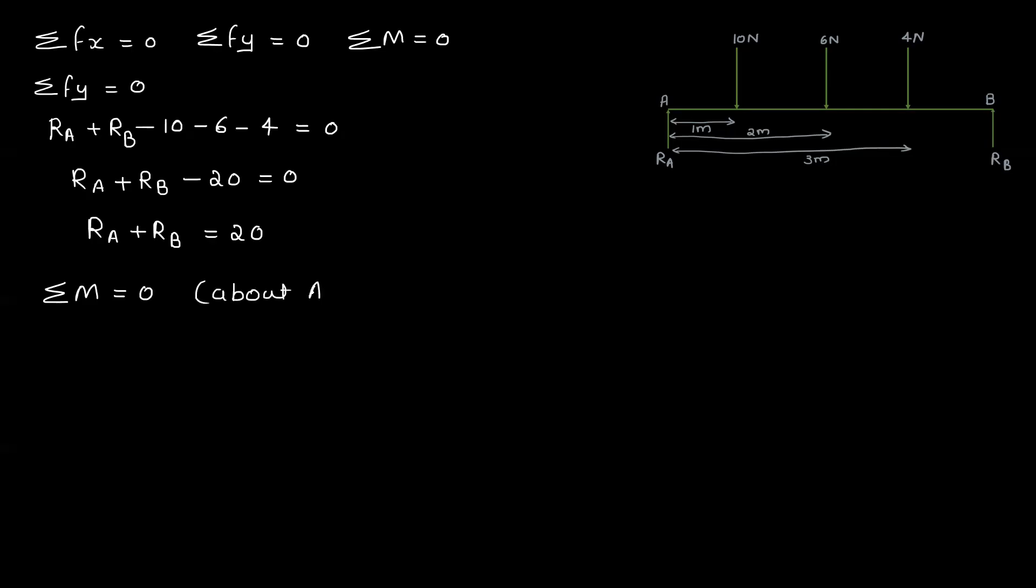Taking moments about A. The moment is reaction times perpendicular distance. Minus 10 into 1, minus 6 into 2, minus 4 into 3, plus RB into 4 equal to 0.